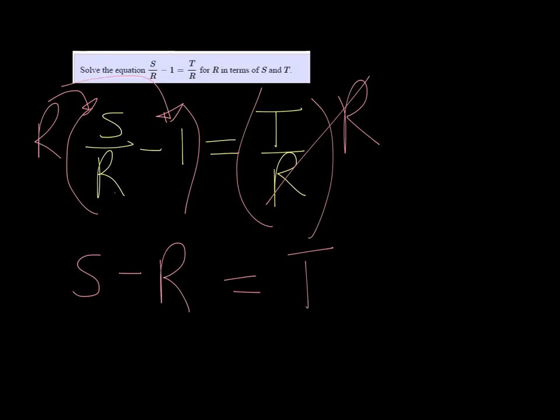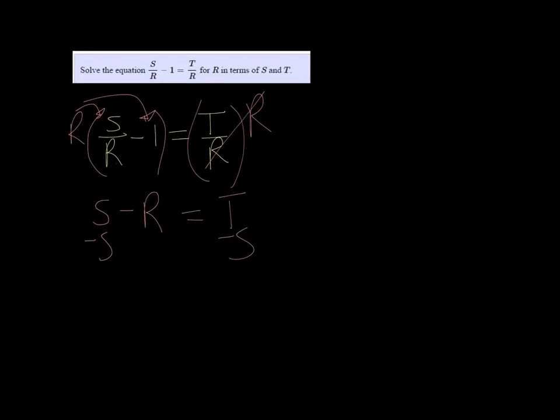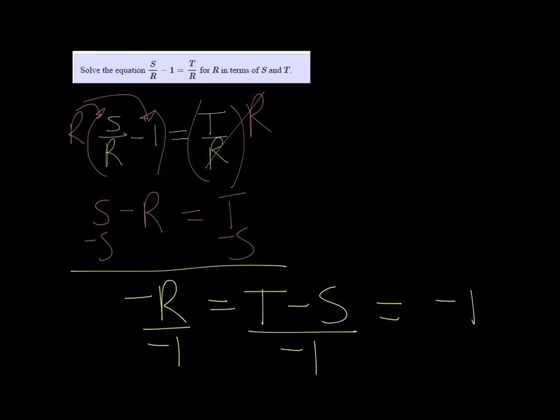To get r by itself, I should subtract s on both sides. And then I have negative r equals t minus s, and then I'll divide by negative 1, and that changes it to be negative t plus s. It just changes the sign on both of them. So r is equal to negative t plus s.